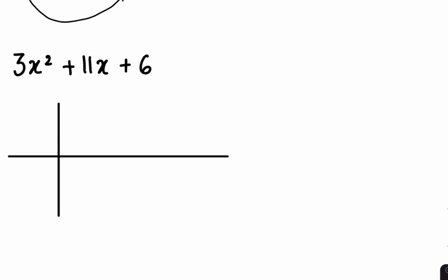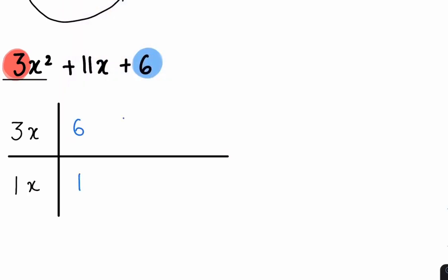Our next example is 3x squared plus 11x plus 6. Draw your table and then look at your coefficient, which in this case is a 3. What are your factors of 3? 3 and 1. But because we have 3x squared here, you have to place an x here and place an x here because 3x multiplied by 1x gives you 3x squared. Then you look at your last number, which in this case is a 6. You then have to list the factors of 6: 6 and 1, 1 and 6, 2 and 3, and 3 and 2.